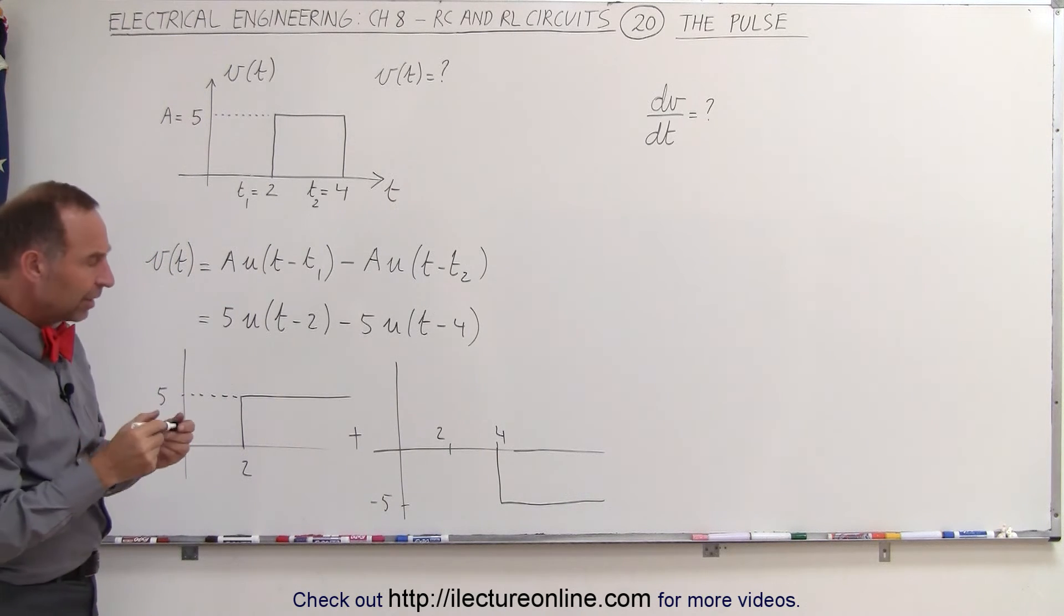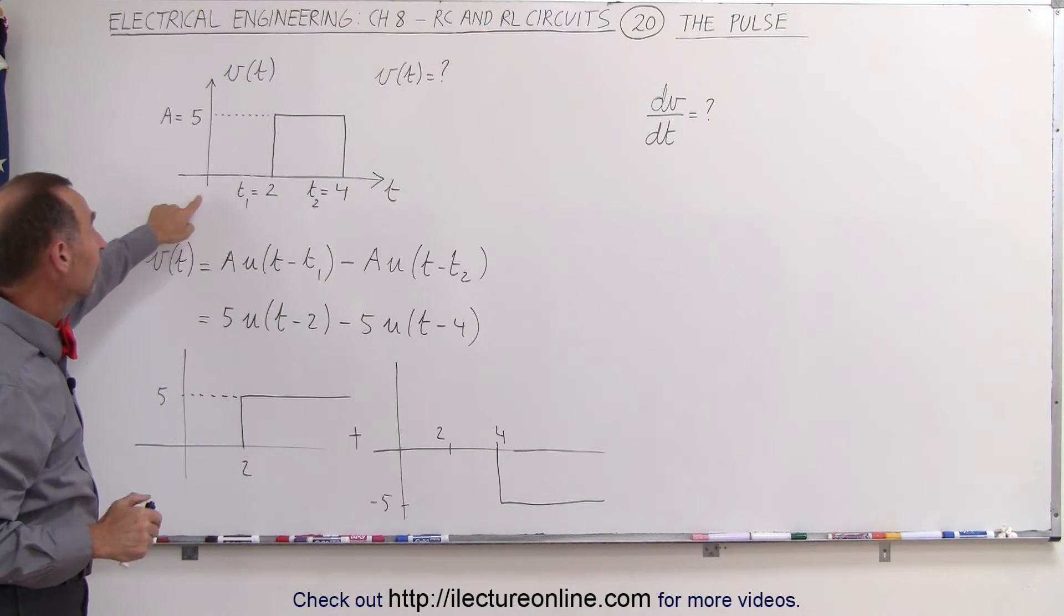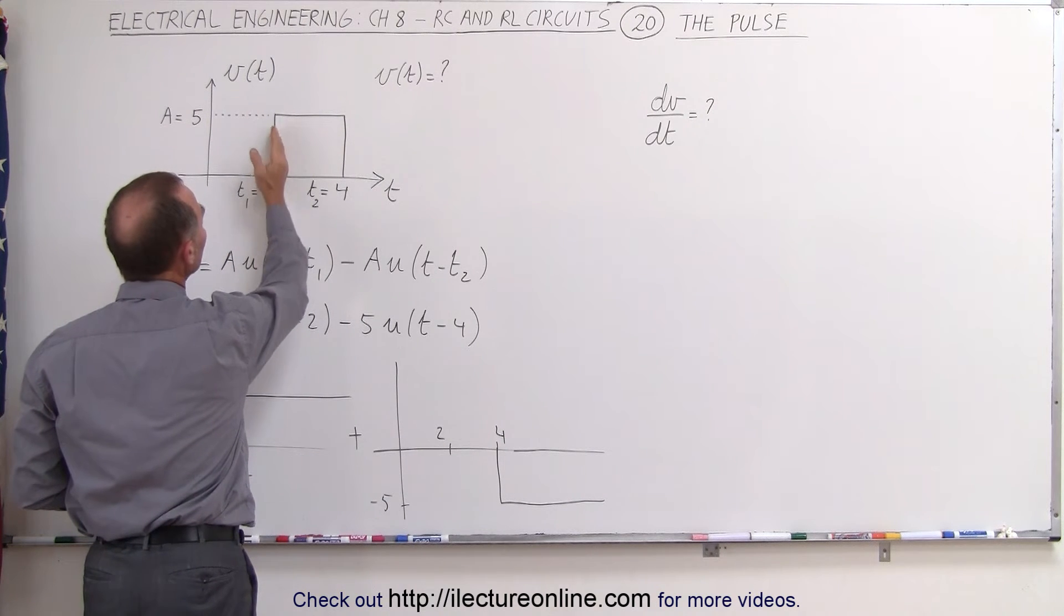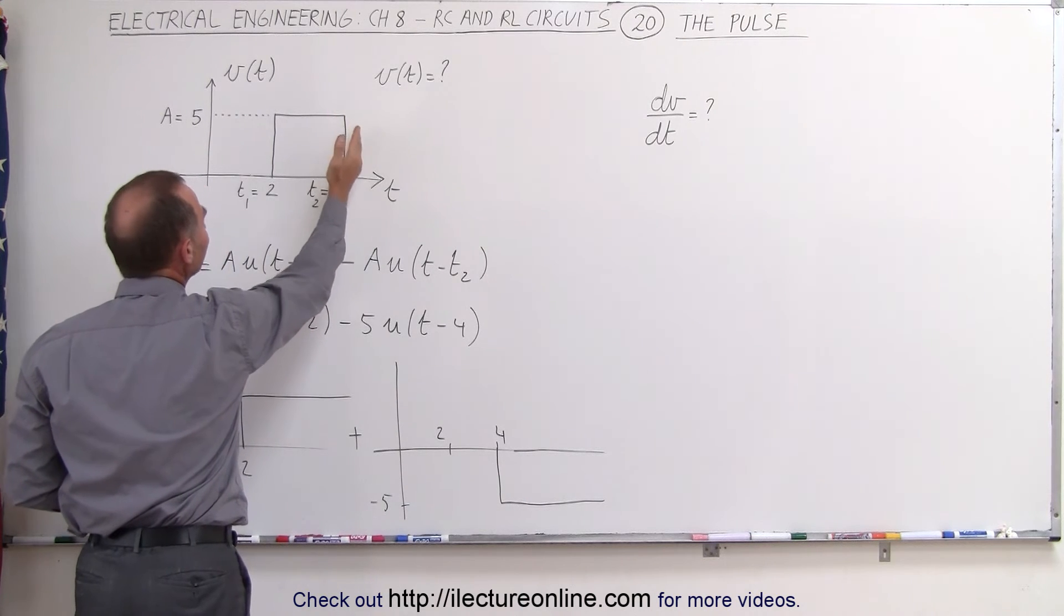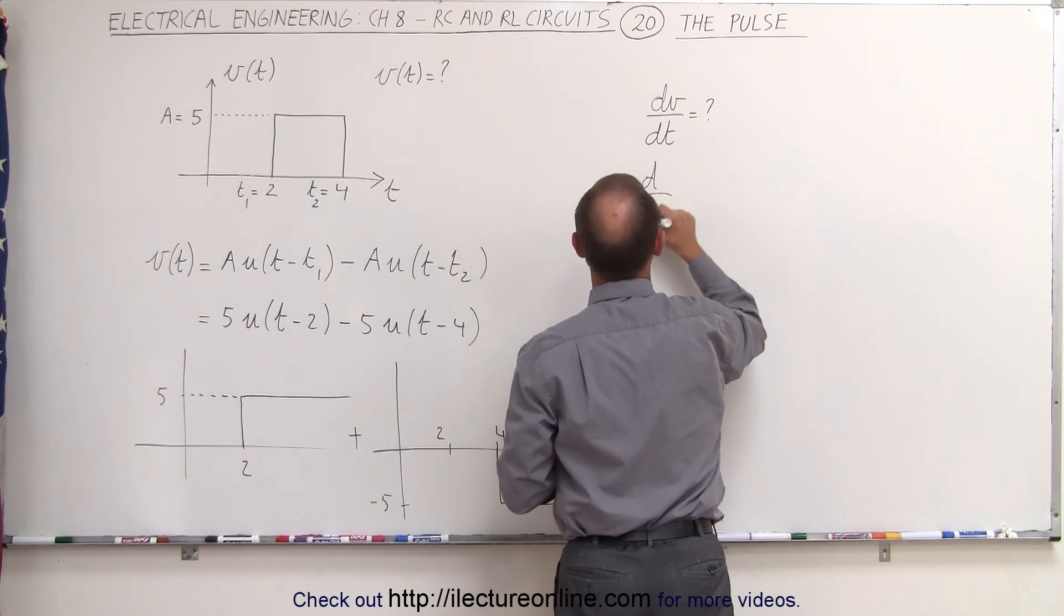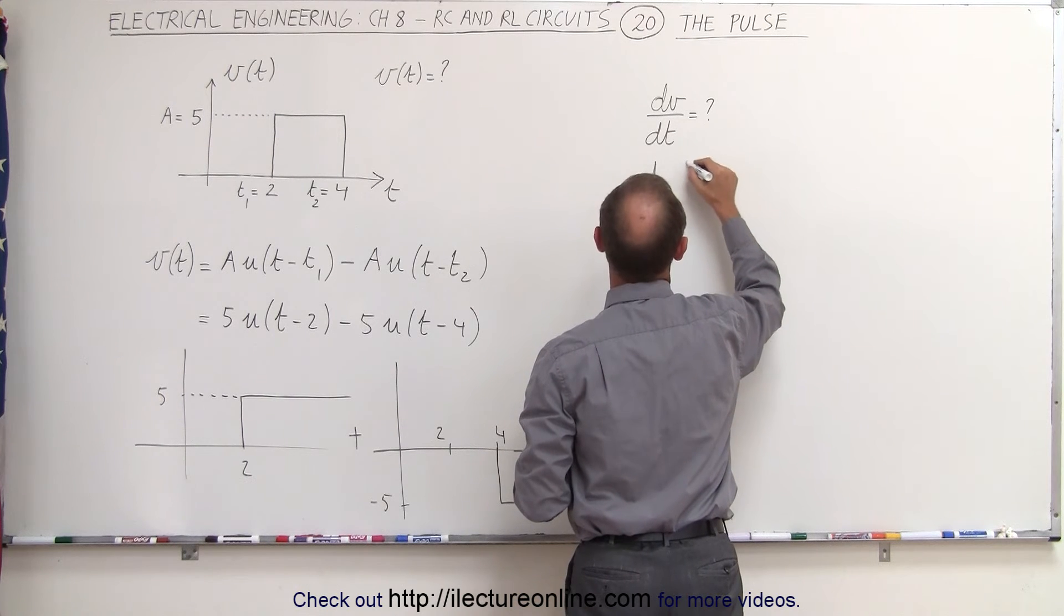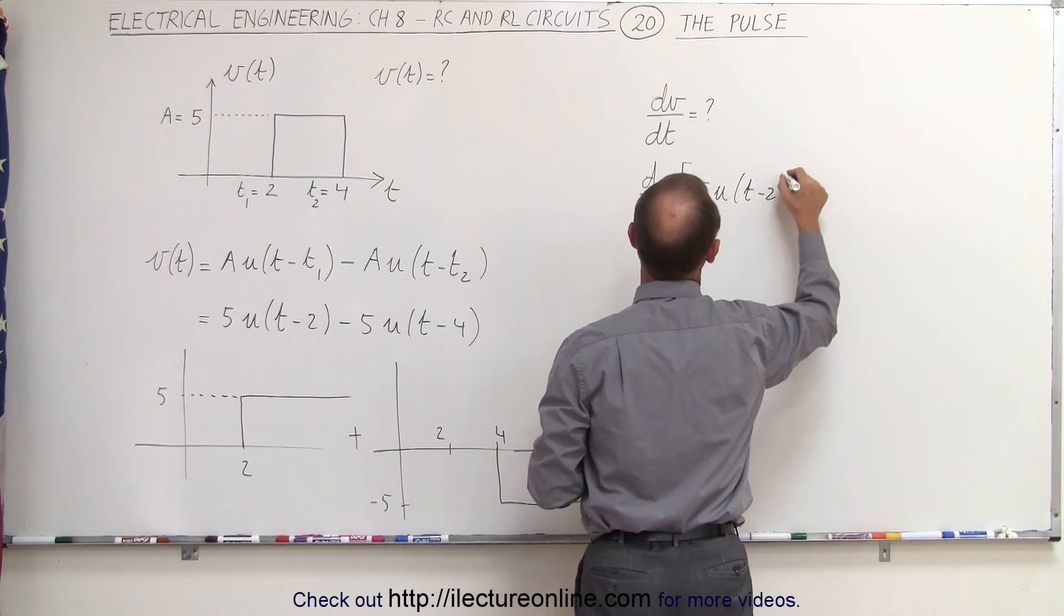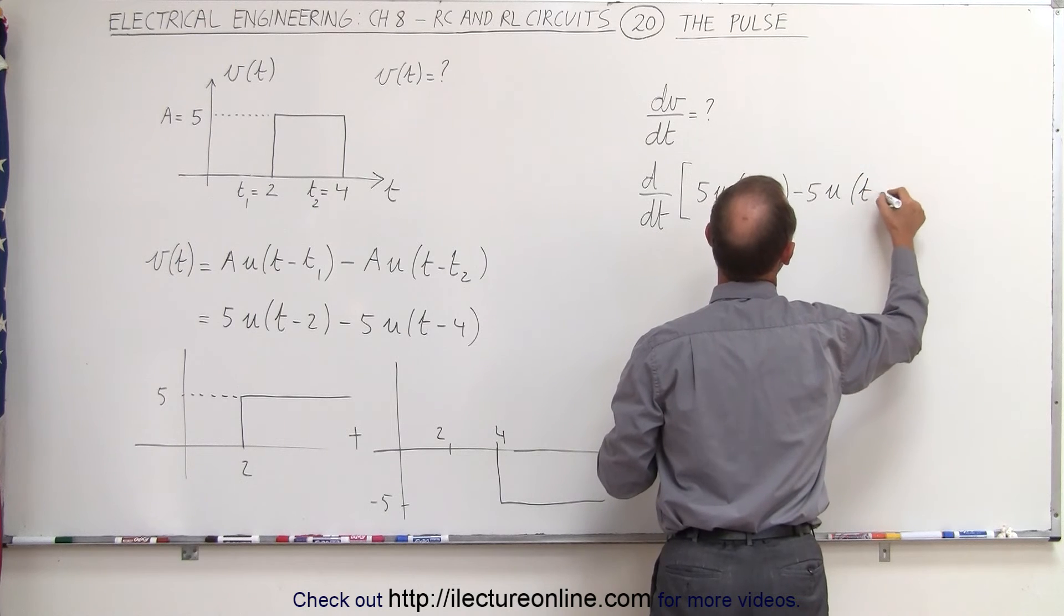A second part of this is what would happen if we were to differentiate that input. Notice that the derivative would be an impulse function right here, zero because there's no slope here, and then an impulse function there. So if we take the derivative of this, let's write that down. So the d dt of this particular function right here would be equal to the d dt of five times the unit function of t minus two, minus five times the unit step function of t minus four.